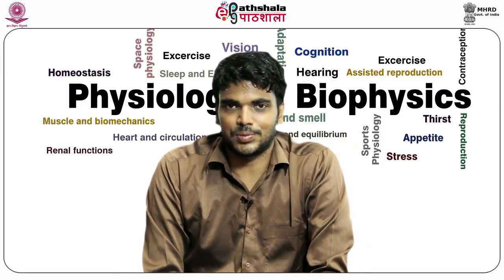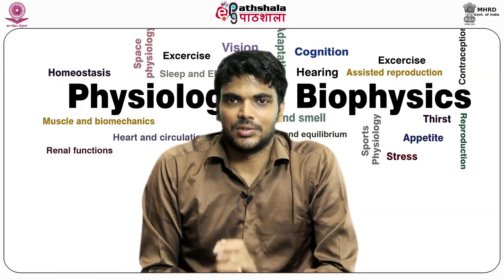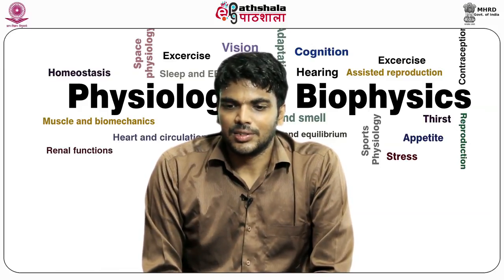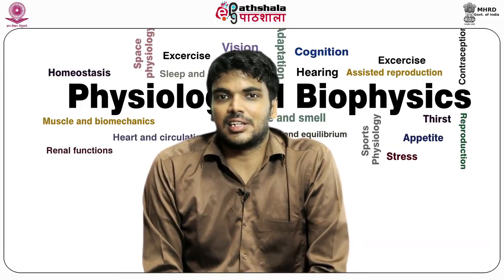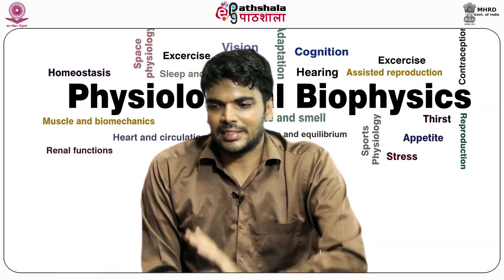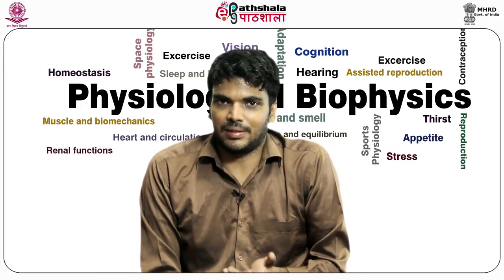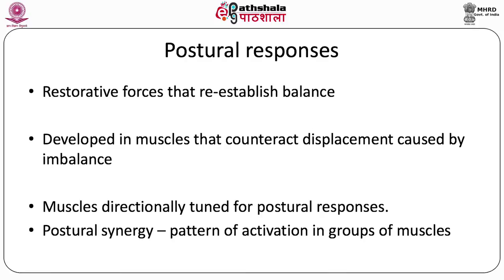Restorative forces are developed in muscles that can bring us back to stability. The body can be displaced in any direction, and muscles are arranged — through their origins and attachments — to restore the body in specific directions. For example, if the body swings forward, the plantar flexors swing it backward. The plantar flexors are tuned to be maximally recruited in postural displacements that swing us forward.